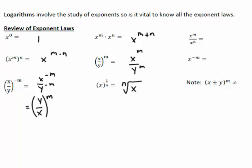Last three here: x to the m over x to the n — we subtract our exponents in this case. If we have a negative exponent, we can get rid of it by taking the reciprocal of that value. And an important thing to note: when we have x plus or minus y, all to the m, it is not equal to x to the m plus or minus y to the m. The m does not distribute in — that is very, very important.